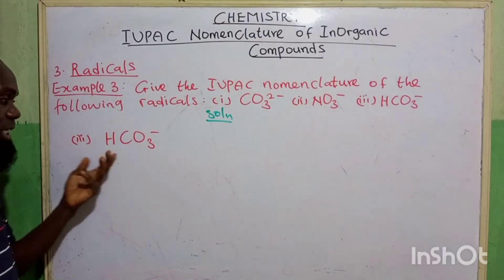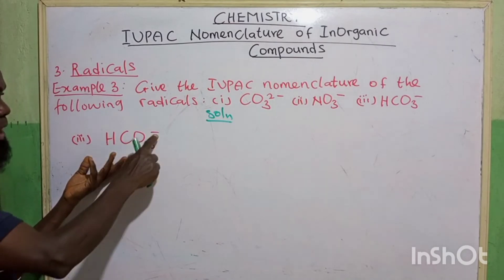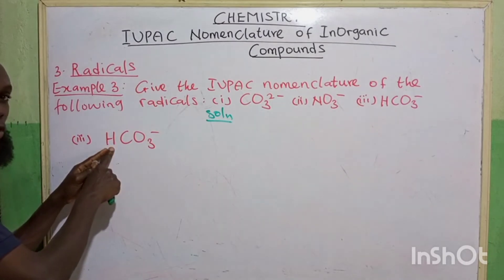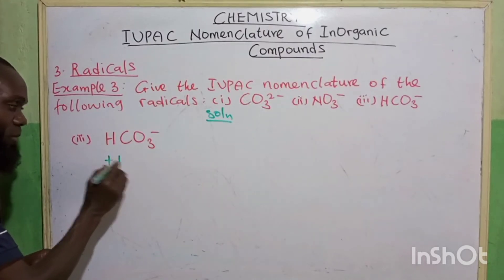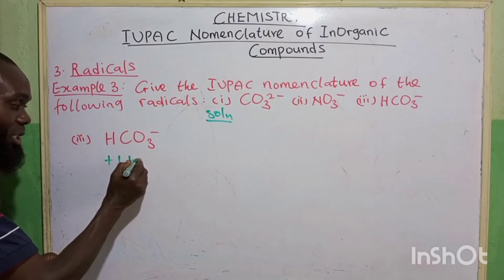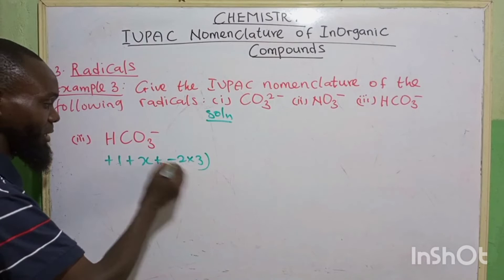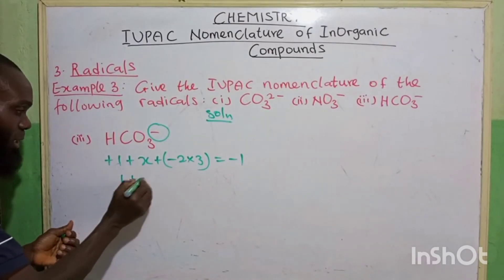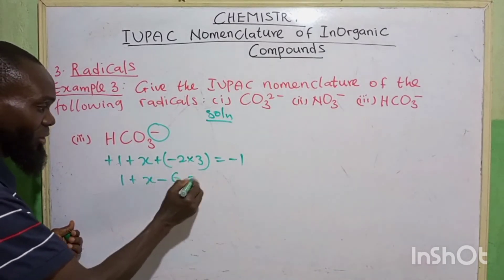The last one is HCO3. Look at this. Definitely, for this one to have a radical, something has been lost here as well. Maybe this is 2 hydrogen, one has been lost. So the center element here is carbon. So the valency of hydrogen is plus 1 plus carbon is unknown. Let's call it X plus oxygen minus 2 multiplied by 3 is equal to minus 1, which is the charge on it. So we have 1 plus X plus minus 2 times 3, 6 is equal to minus 1.